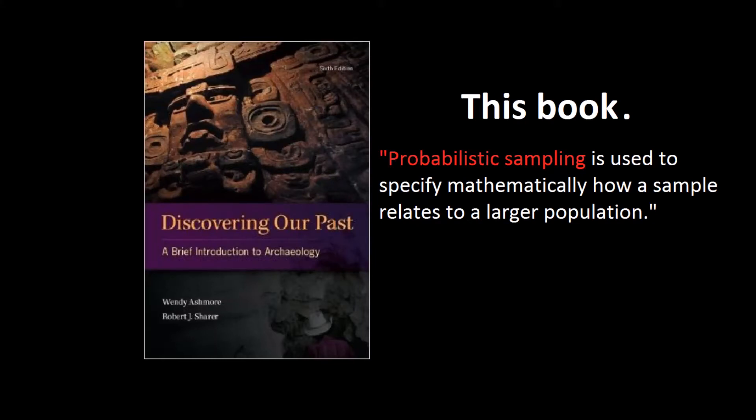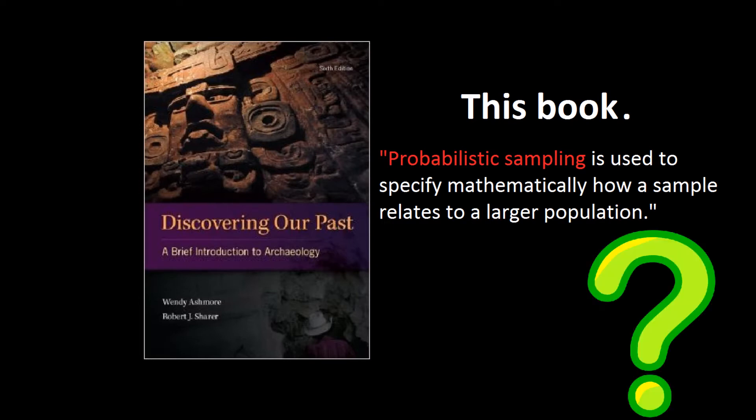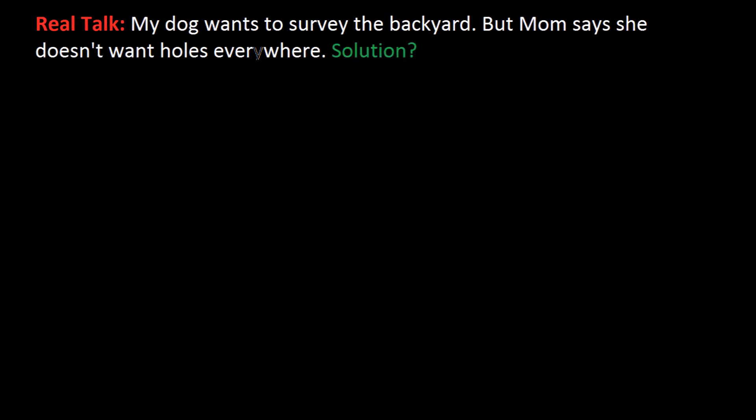Probabilistic sampling is used to specify mathematically how a sample relates to a larger population. So real talk, my dog wants to survey the backyard, but mom says she doesn't want holes everywhere. Solution?